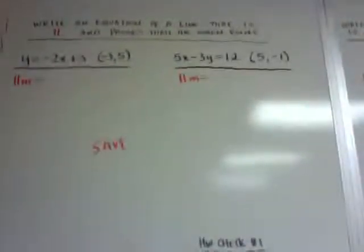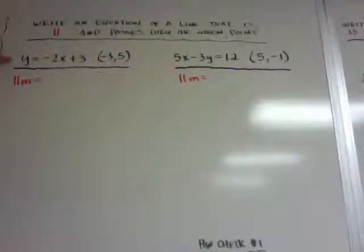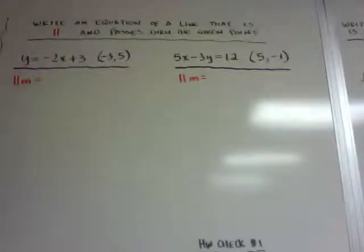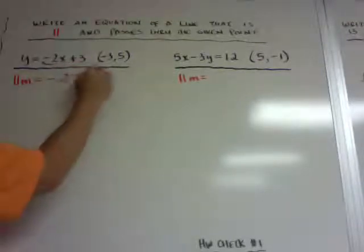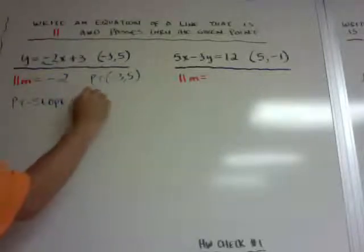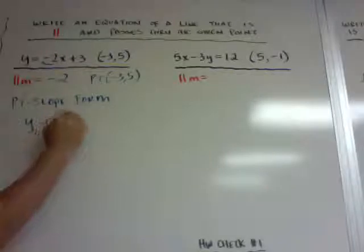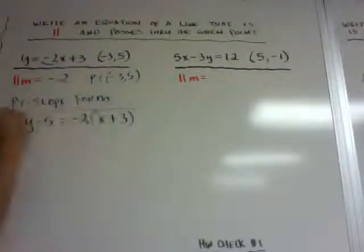The next example: write an equation of a line that is parallel and passes through the given point. y equals negative 2x plus 3 is your line, and they want a line parallel to that through a given point. All I need to do is find the slope. My parallel slope is the same — negative 2. My point is negative 3, 5. Since I have a slope and a point, I use point-slope form: y minus 5 equals negative 2 times the quantity x plus 3. And that's all there is to it.